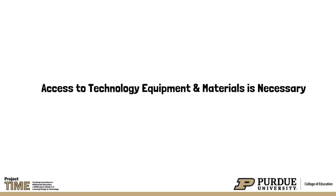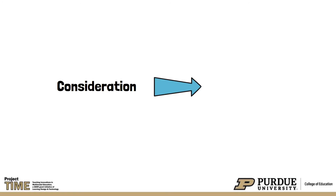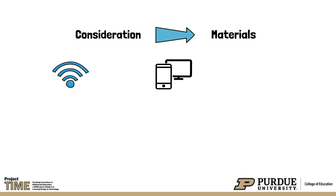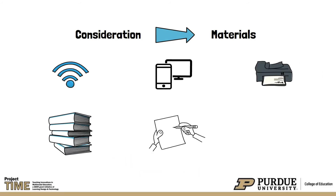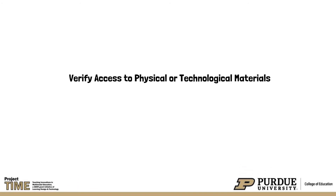Determining student access to technology equipment and materials is necessary for blended and online learning scenarios. Consideration should be given to the materials needed, such as Wi-Fi access, computer or smartphone access, access to a printer, textbooks, paper, pencils, markers, scissors, glue, or any other materials. It is important to verify access to required materials, physical or technological, prior to implementing blended and online lessons.